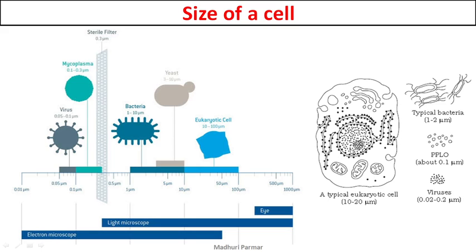A typical eukaryotic normal cell taken from your liver, skin, or buccal cavity will be 10 to 20 microns. Bacteria are 1 to 2 microns — just remove the zeros. So a eukaryotic cell is 10 times as big as a bacterial cell. If you remember 10 to 20 microns for eukaryotic cells, remember 1 or 2 microns for a typical bacterial cell.